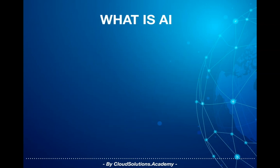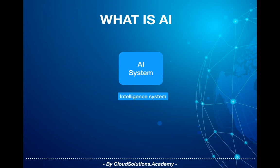Artificial intelligence is an intelligent system put together artificially to learn and provide an output. Learning can be done by providing data to the AI system.